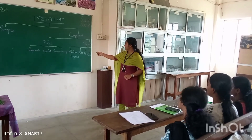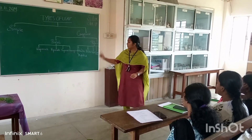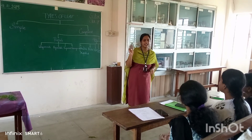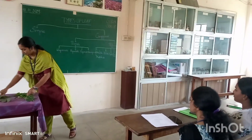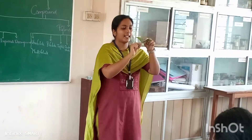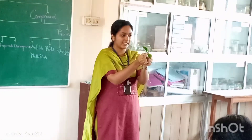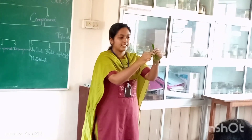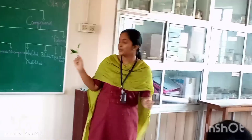Under palmately compound, the types are unifoliate, bifoliate, trifoliate, and multifoliate. Unifoliate means a single leaflet is arranged at the top of the petiole. For example, in the citrus plant, a single leaflet is arranged at the tip of the petiole. It is called unifoliate.